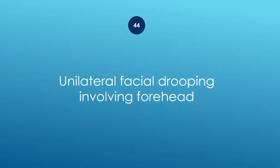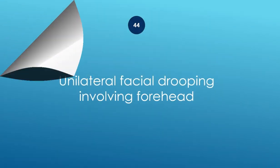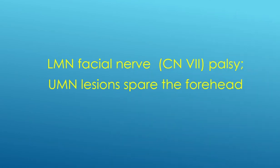Unilateral facial drooping involving the forehead — lower motor neuron facial nerve palsy. Upper motor neuron lesions spare the forehead.